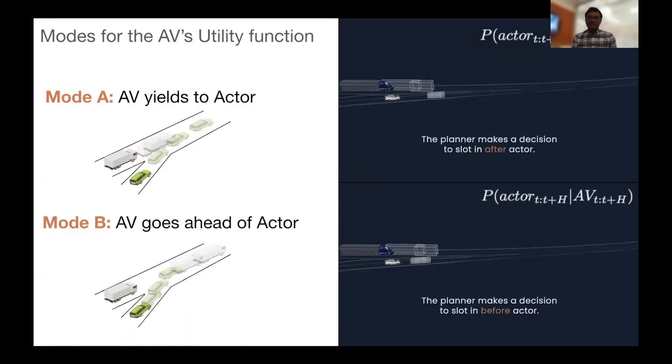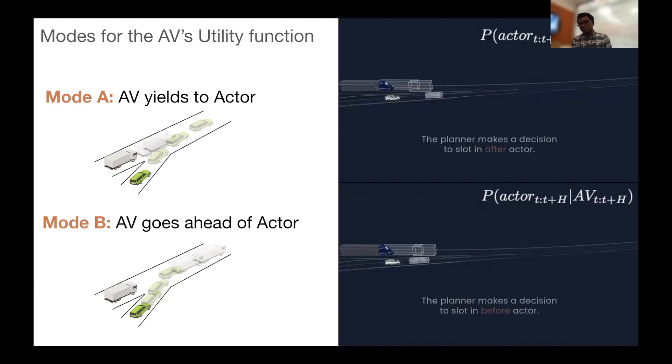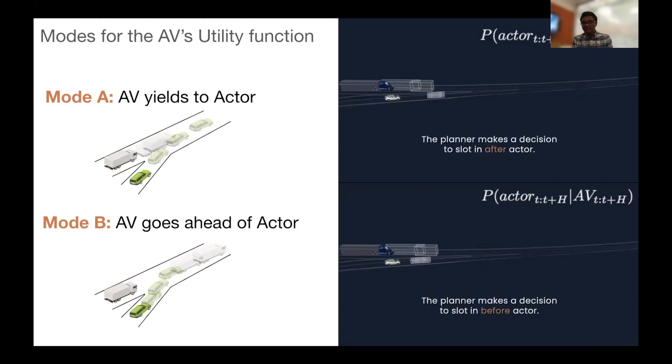Specifically, we can try to break this down into two stages. There's the p(actor future) given what the AV is trying to do. In mode A, we can have that the AV yields to the actor, and this leads us to a distribution for the actor futures that's conditioned on what the AV is going to do. In mode B, we can have where the AV is going ahead of the actor behavior and get a forecast that's a function of this new future, this new conditioning of what the AV is trying to do.